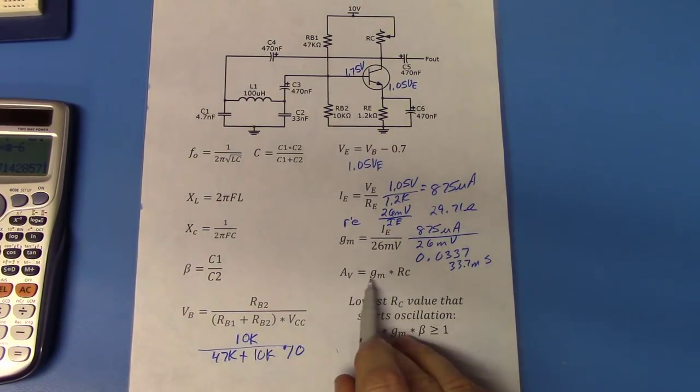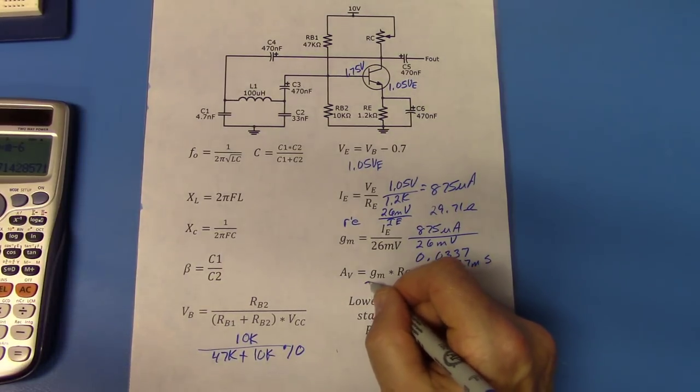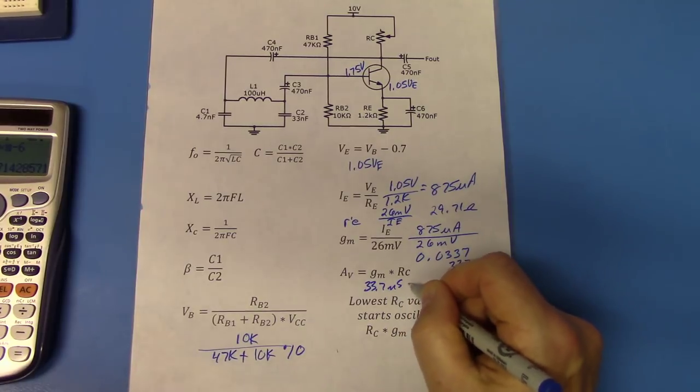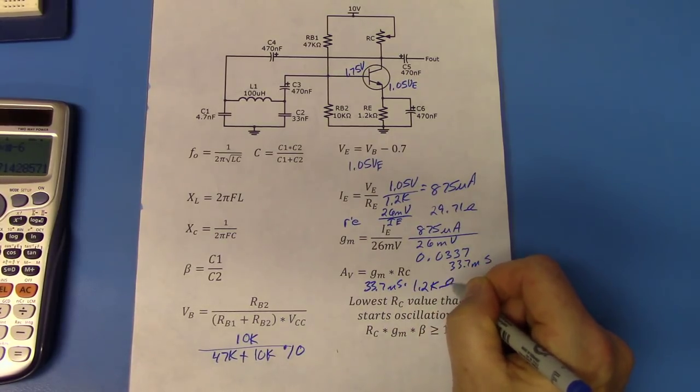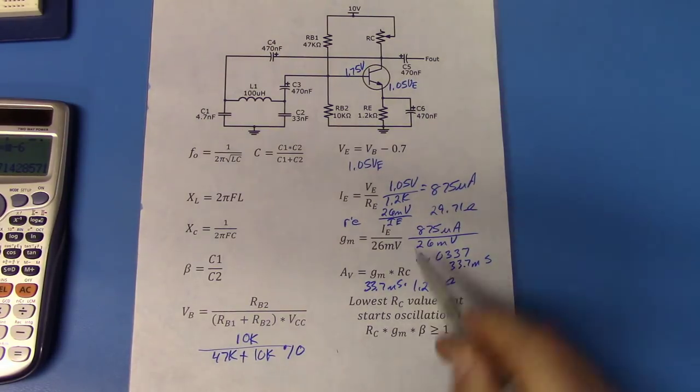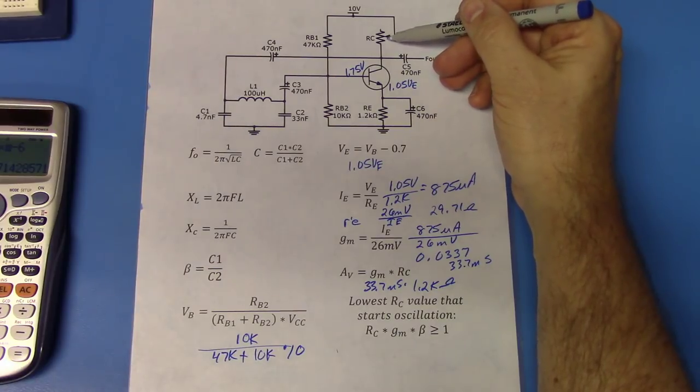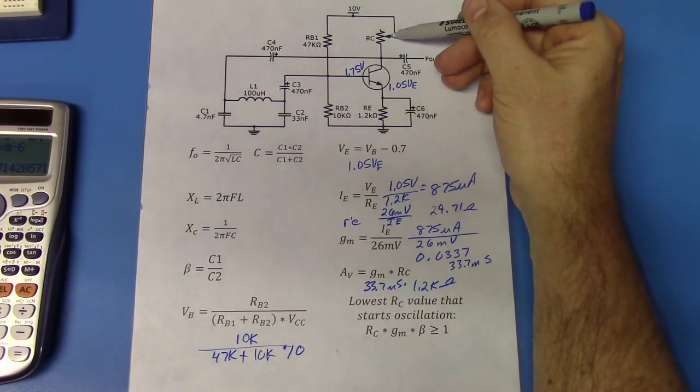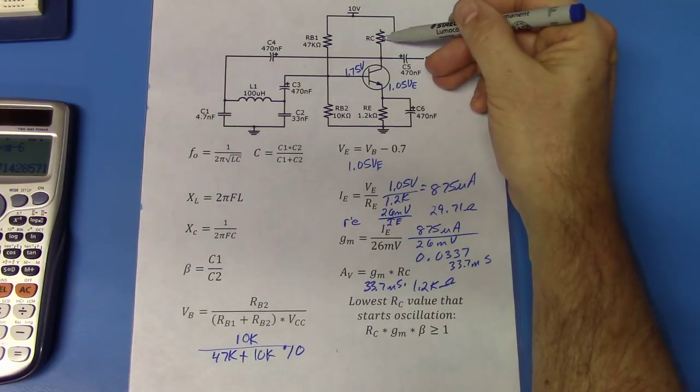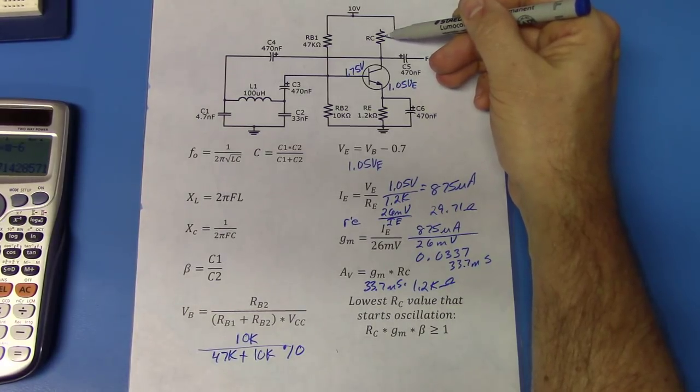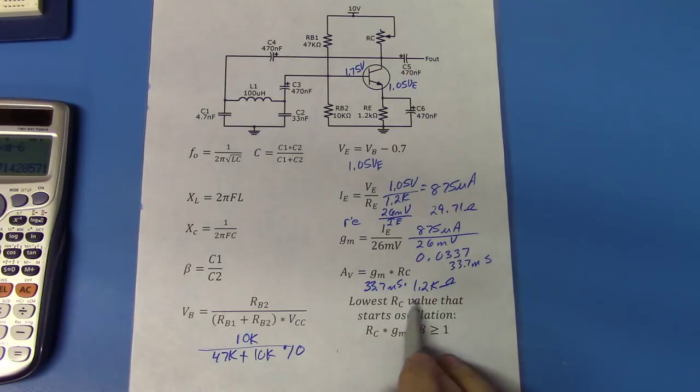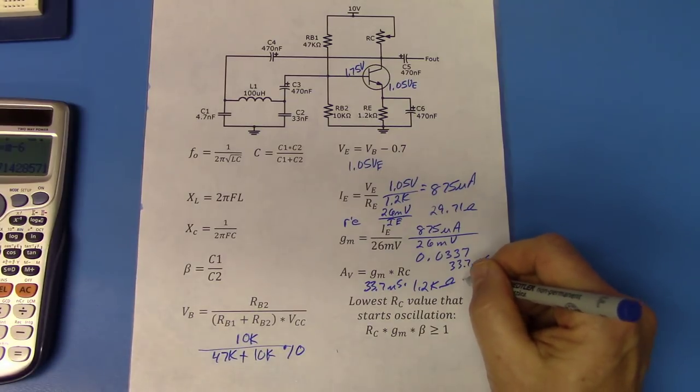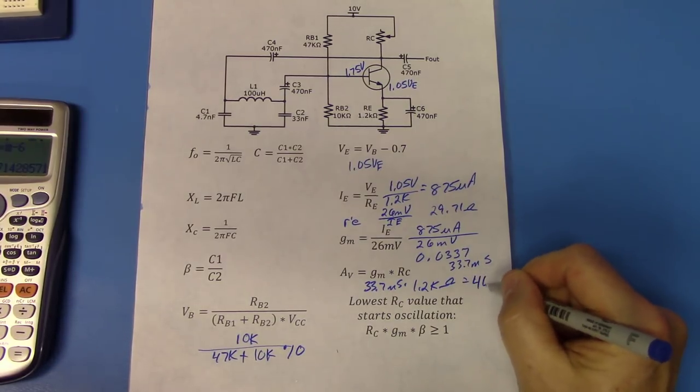If we wanted to use R prime E, we would take our 26 millivolts, and divide that by 875 micro, and we would get 29.71 ohms. To get the gain of the circuit, if we use conductance, we would have 33.7 millisiemens times 1.2k ohms. And notice that I'm using a potentiometer, in this case, for RC. And I did that because I decided, I want to see how I can prove at least the first two tenets of Barkhausen's criterion. And so I started out with a 1.2k ohm, and then I decided, I'll just put a potentiometer in here, or the decade resistance box. And the resistance box right now is set to 1.2k, so this is a good value.